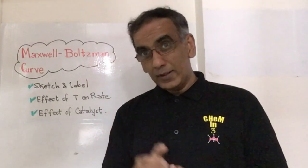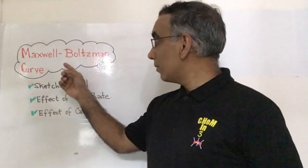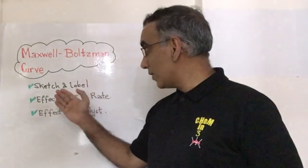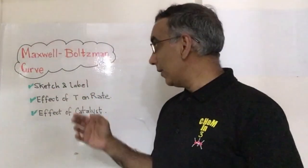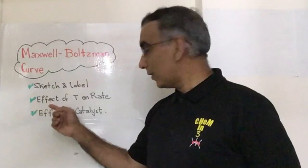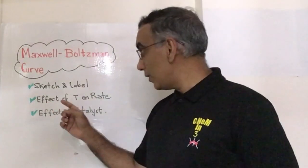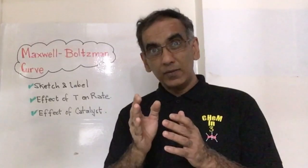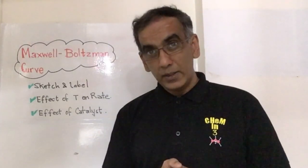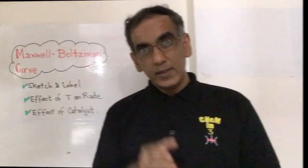Welcome again. Today on CHEMIN3 we look at the Maxwell Boltzmann curve and how to sketch and label it, how to use it to demonstrate the effect of temperature on reaction rate, and how to use it to demonstrate the effect of catalysts on reaction rate. Let's move in and take a closer look.